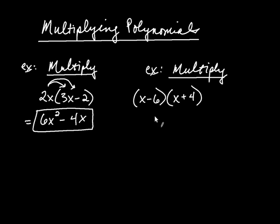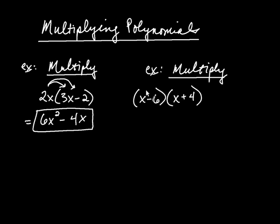Now let's go over to here where we're multiplying a binomial by another binomial. The way we do this is we start with the binomial on the left and take each of its terms one at a time. We'll take that x to begin with and distribute it over the second binomial. So it's first going to be x times x, and then x times positive 4.